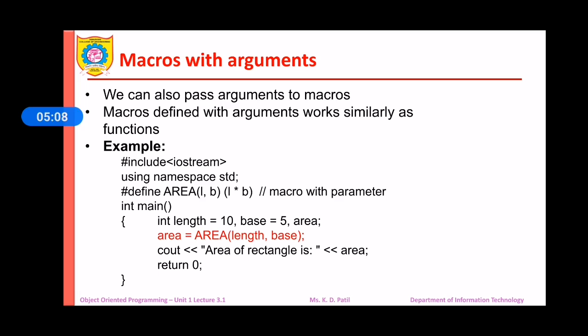Please observe the example. Here, hash define AREA(L, B), L star B is the macro. Now, to the AREA macro that is uppercase AREA is our macro and two parameters are passed to that macro as L and B. And after that, the code, the piece of code which is supposed to be executed whenever that macro is called, it is written as the area of rectangle as L multiplied by B.